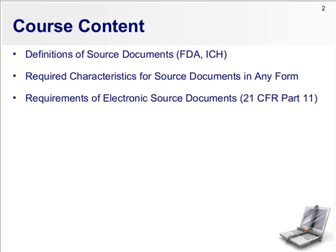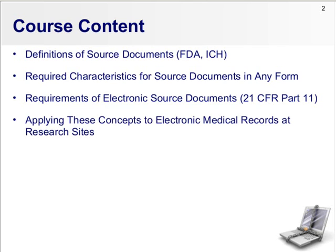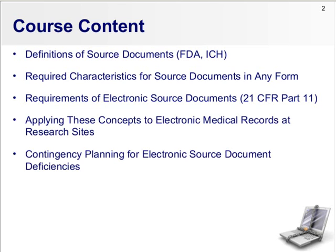How are the requirements for electronic source documents different, maybe, than paper-based documents? Some strategies for applying all the definitions and concepts to research sites' medical records in an electronic format, and then how do we do contingency planning and risk assessment for the use of electronic source or electronic medical records at sites?